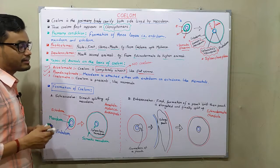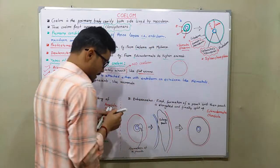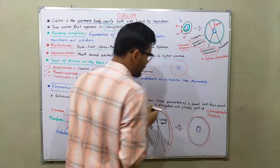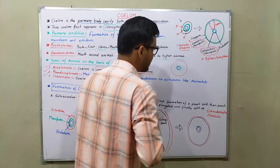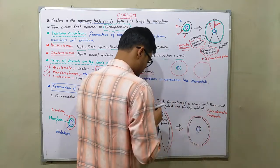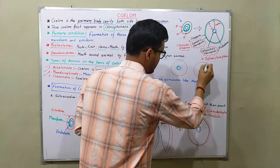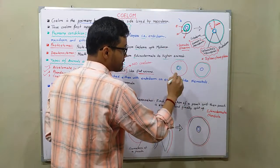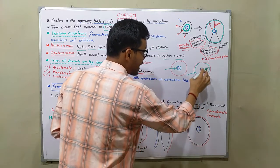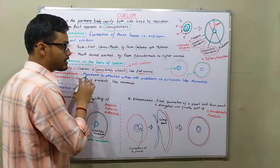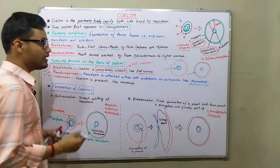In pseudocoelomate animals, the mesoderm is attached either with the endoderm or with the ectoderm — only on one side. One side is completely blank with no mesoderm present. Those animals are called pseudocoelomate, and examples are nematodes like Ascaris.